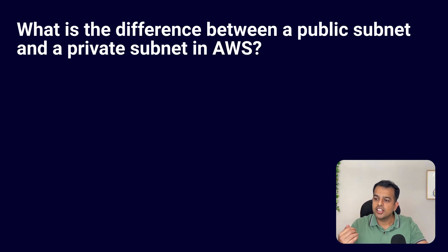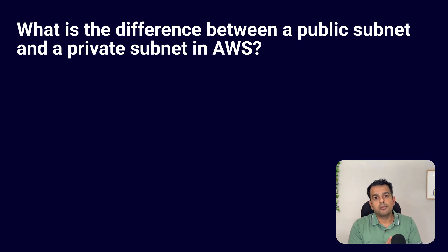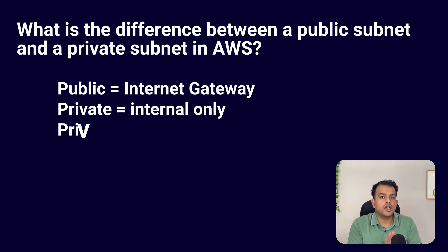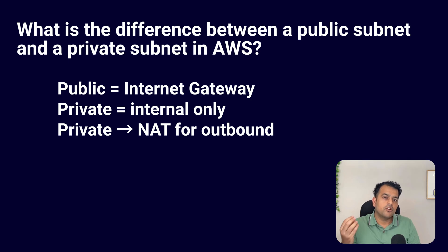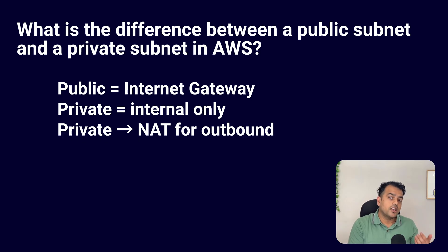Then there was a cloud networking question: what is the difference between a public subnet and a private subnet in AWS? A public subnet has a route to the internet through an internet gateway, so instances inside can be accessed from the internet. A private subnet has no direct internet route — it is used for databases, internal services, and backend systems. Private subnets usually access the internet through a NAT gateway.